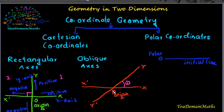Lengths measured along o, x on the right-hand side of x, o, x-dash are positive. Similarly, o, x is positive and o, x-dash is negative. o, y is positive and o, y-dash is negative.